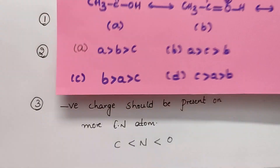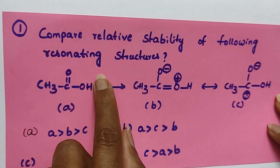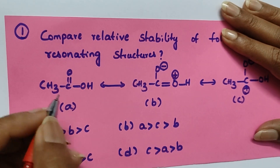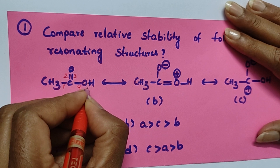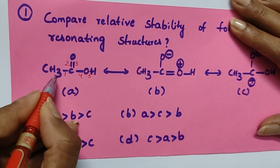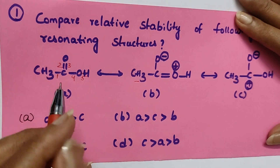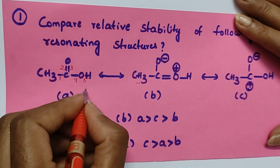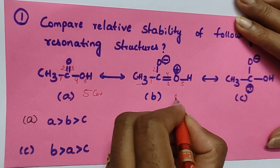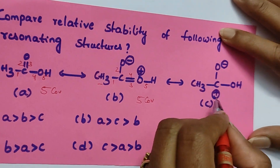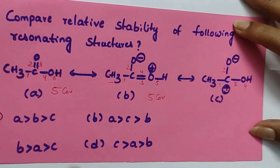Question number one: compare the relative stability of the following resonating structures. Count the number of covalent bonds — one, two, three, four, and between oxygen and hydrogen one bond, that's five. Now for the next structure: one, two, three, four, five — also five covalent bonds, same. Next structure: one, two, three, four — that's four covalent bonds.